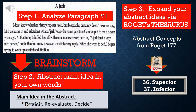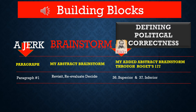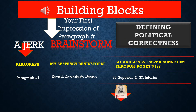Then I went to Roger's Thesaurus and tried to add something to revisit, reevaluate, and decide, and I came up with number 36 and number 37 — superior and inferior. Now I'm going to bring up paragraph 1. My first impression of paragraph 1 was revisit, reevaluate, and decide. Then I'm going to brainstorm through Roger's 177, looking to see if there are any concepts that help me define revisit, reevaluate, and decide. I found 36, superior, and 37, inferior, which relate to revisit, reevaluate, and decide, and also relate to defining political correctness if you read down.